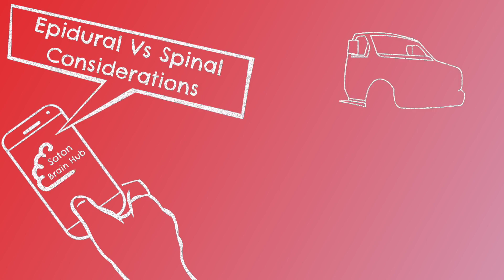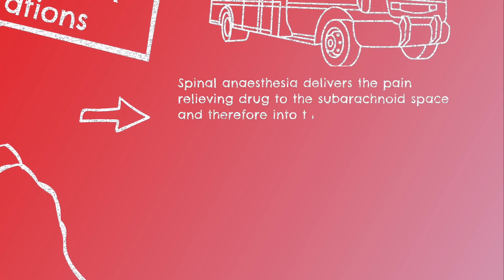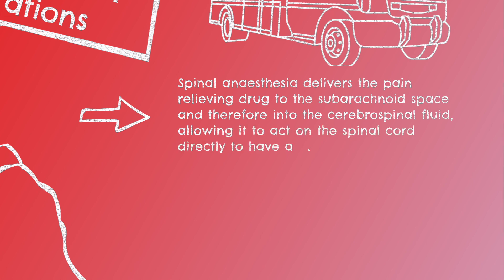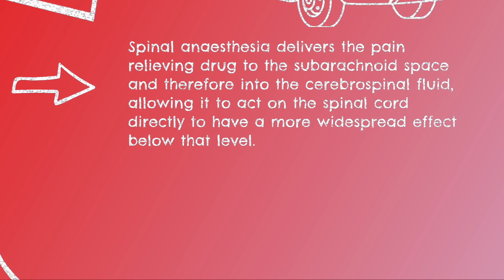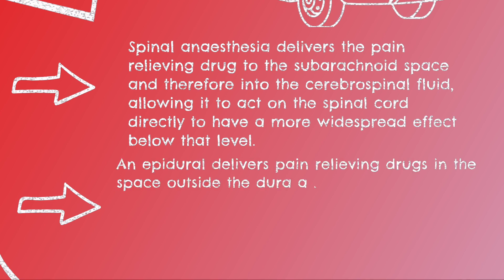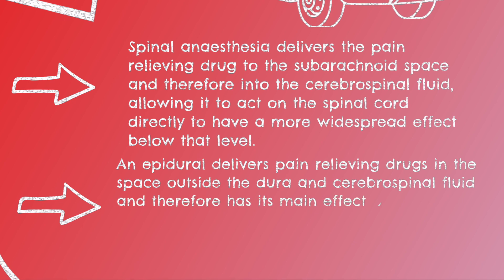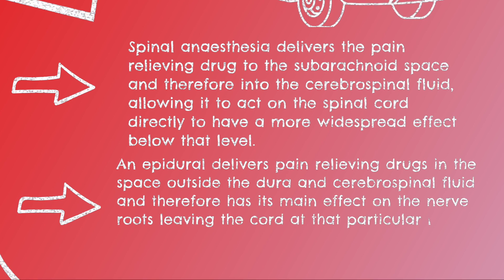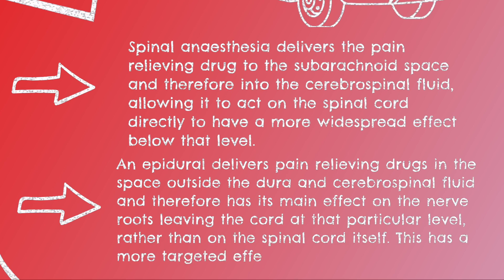Putting this together, we can form a neat summary. Spinal anaesthesia delivers the pain-relieving drug to the subarachnoid space, and therefore into the cerebrospinal fluid, allowing it to act on the spinal cord directly to have a more widespread effect below that level. An epidural delivers pain-relieving drugs in the space outside the dura and cerebrospinal fluid, and therefore has its main effect on the nerve roots leaving the cord at that particular level, rather than on the spinal cord itself — giving it a more targeted effect. Spinal anaesthesia lasts for a significantly lesser amount of time compared to an epidural, and an epidural does not cause as significant a neuromuscular block as the spinal.